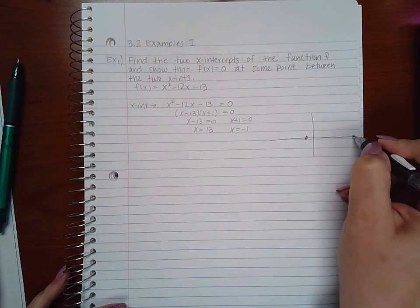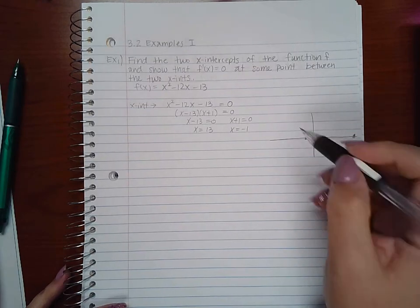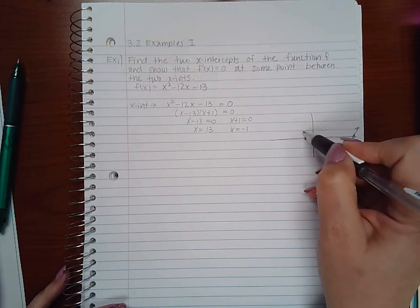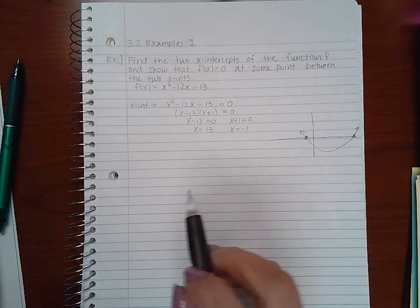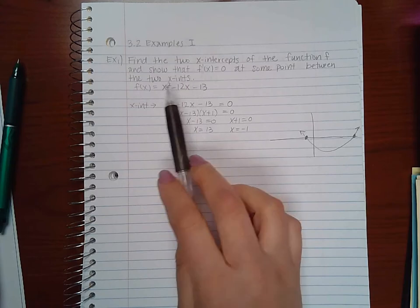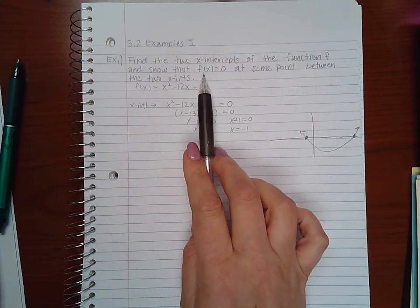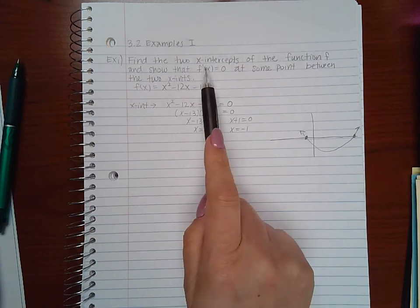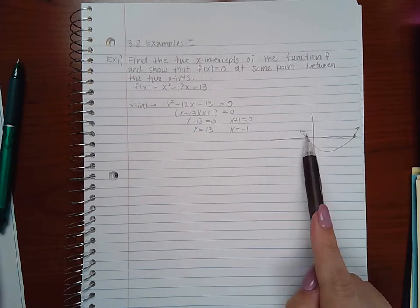Which means that in my graph I have negative 1 here and 13 somewhere over here. And it is a parabola that opens upward, so it will look something like this. Now what it's saying here is that there has to be at least one value, according to Rolle's theorem, there has to be at least one value in between these two.